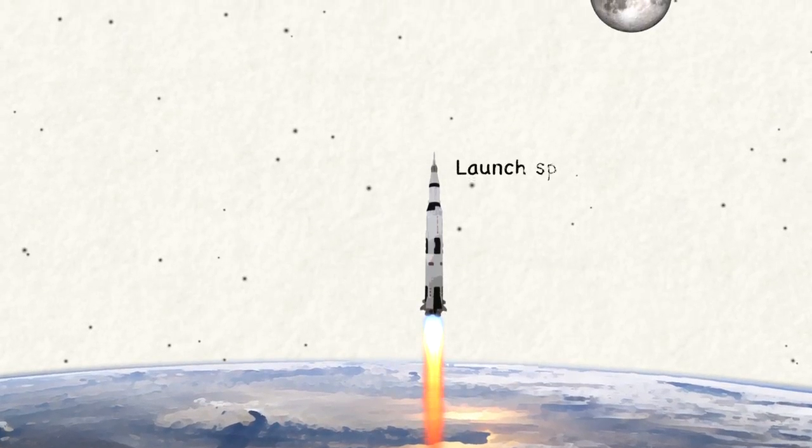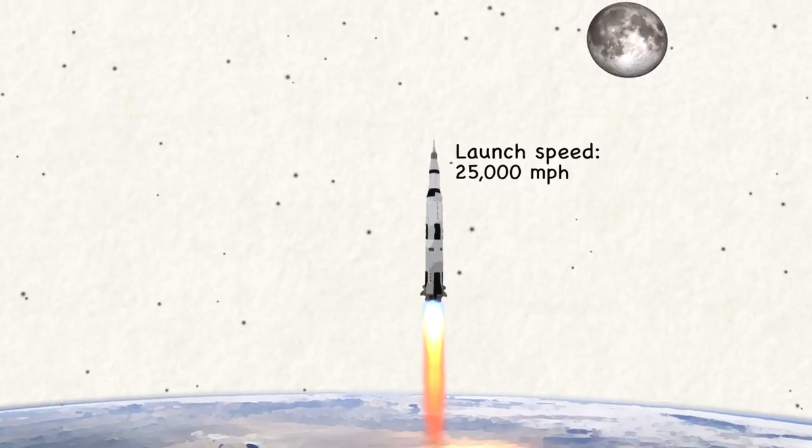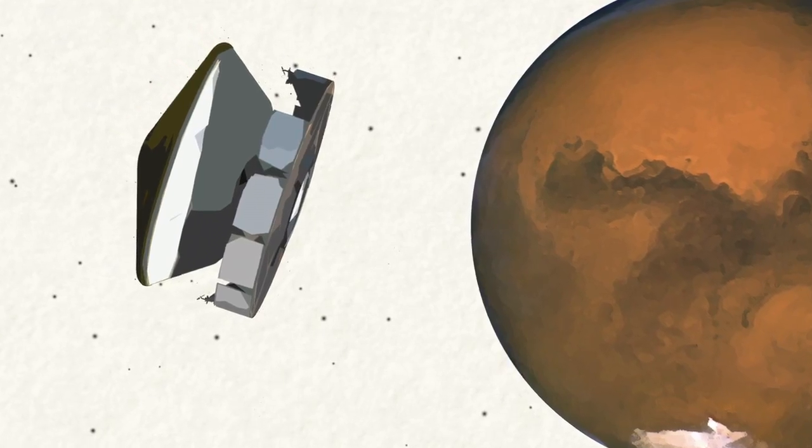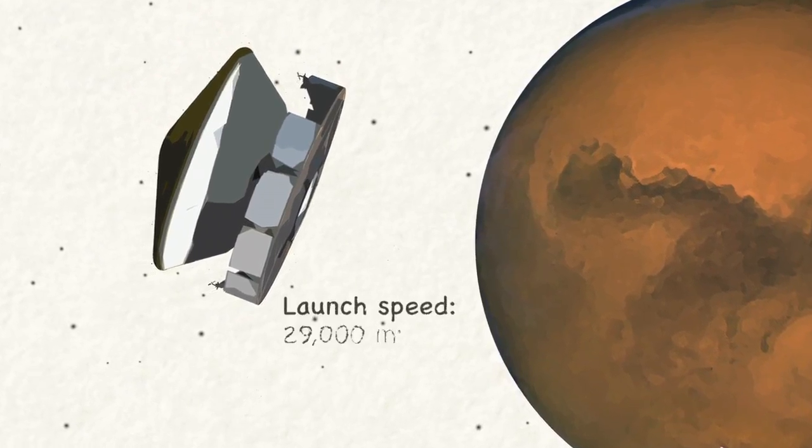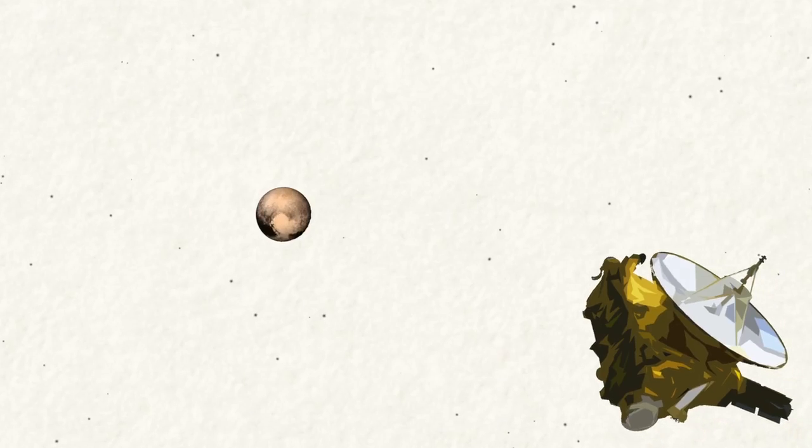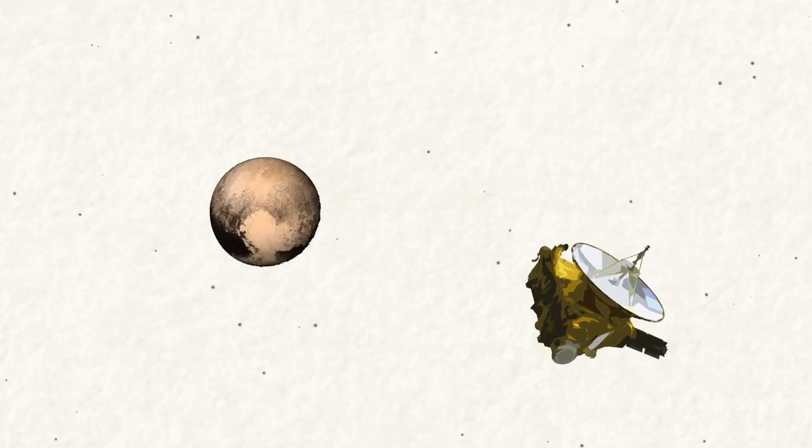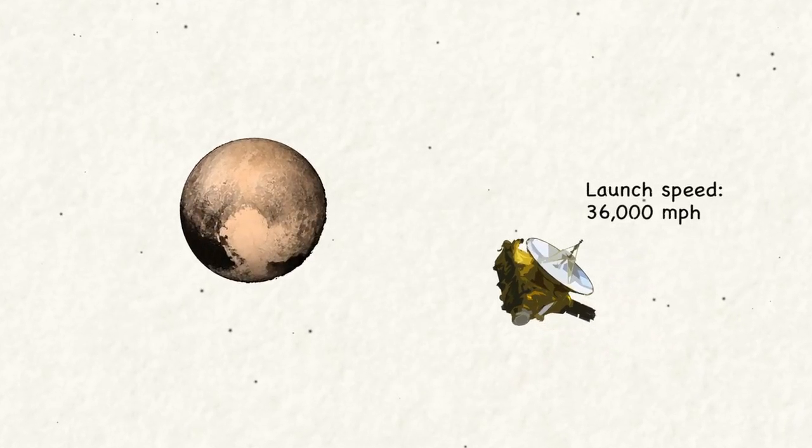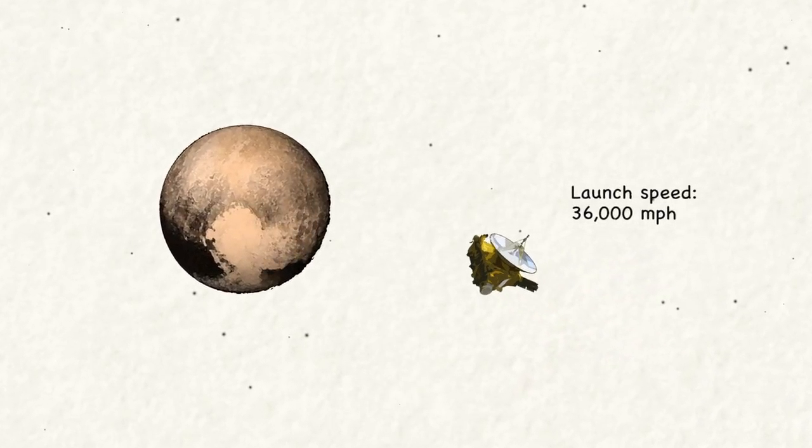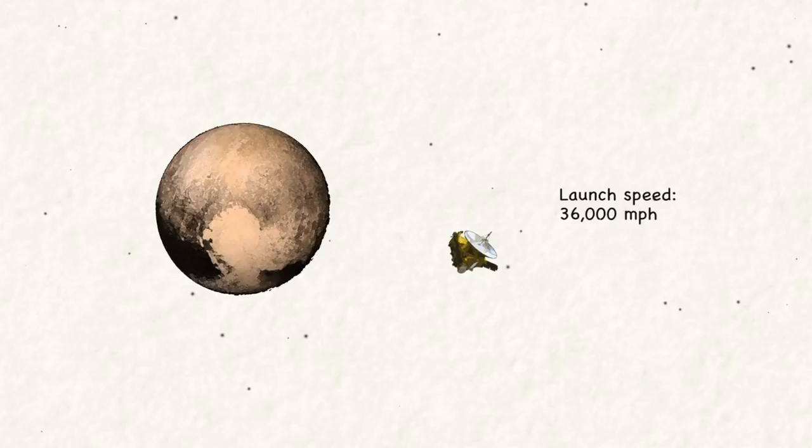Spacecraft have to go upward at only 25,000 miles an hour to escape Earth. Getting to Mars only requires a bit more speed, 29,000 miles an hour. New Horizons, which NASA sent rushing out to Pluto, managed 36,000 miles per hour, or a little more than half what it would have to do to hit the Sun instead.